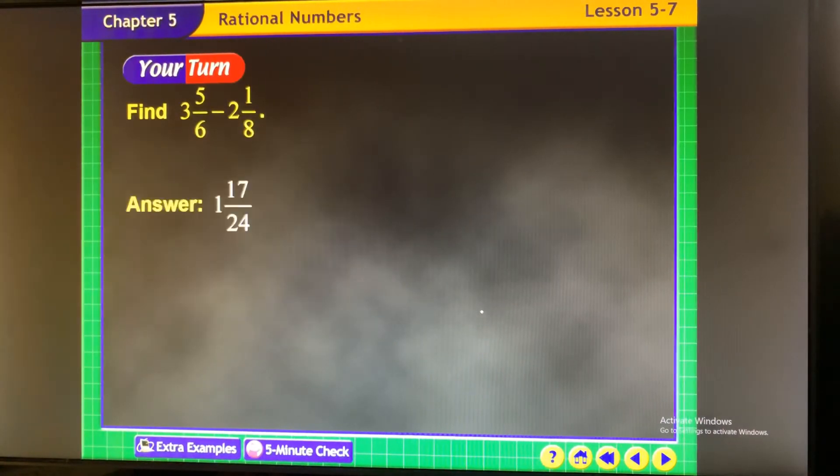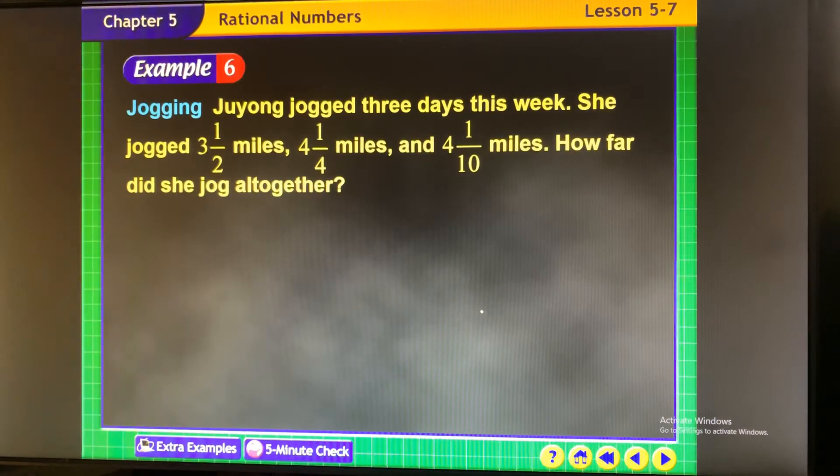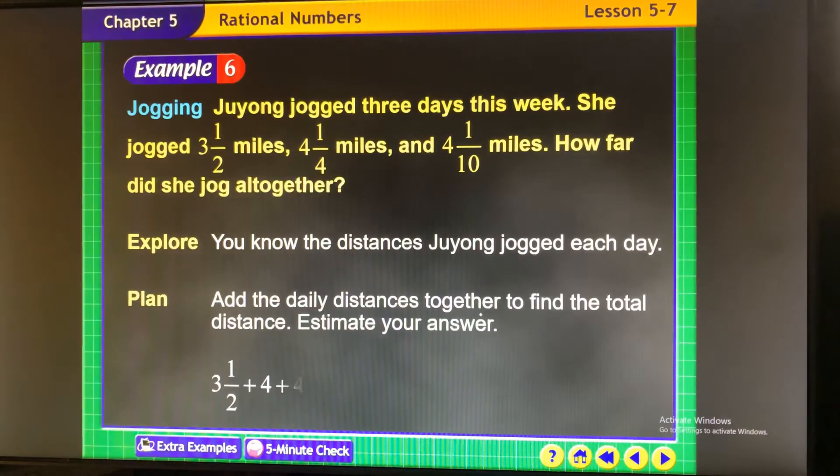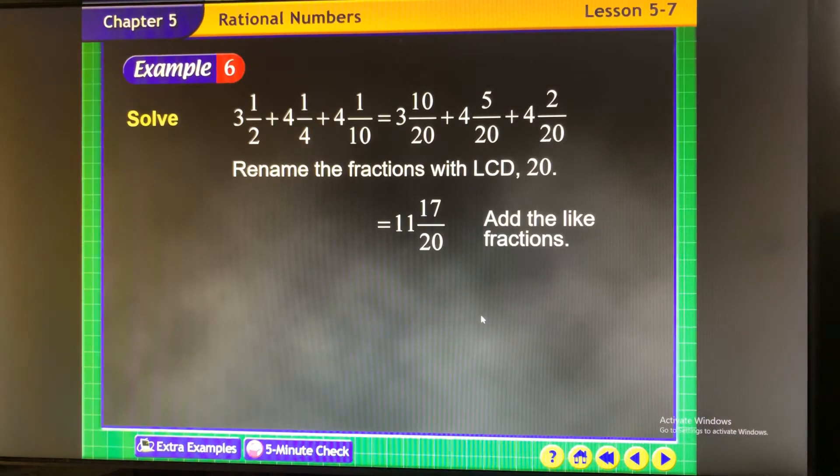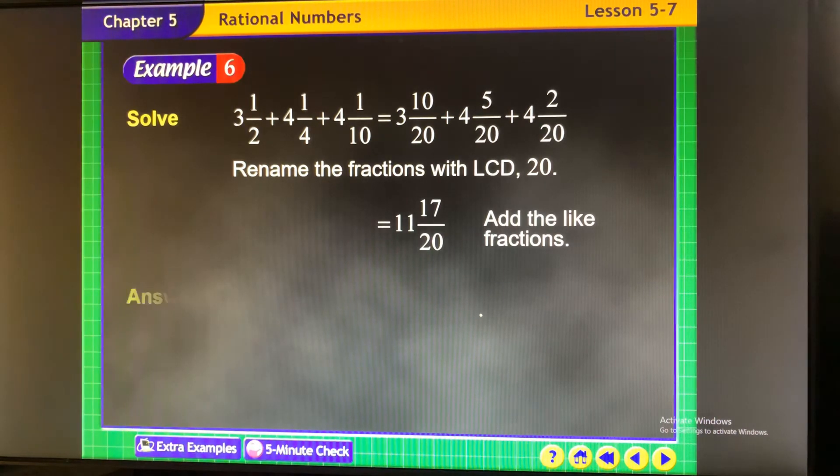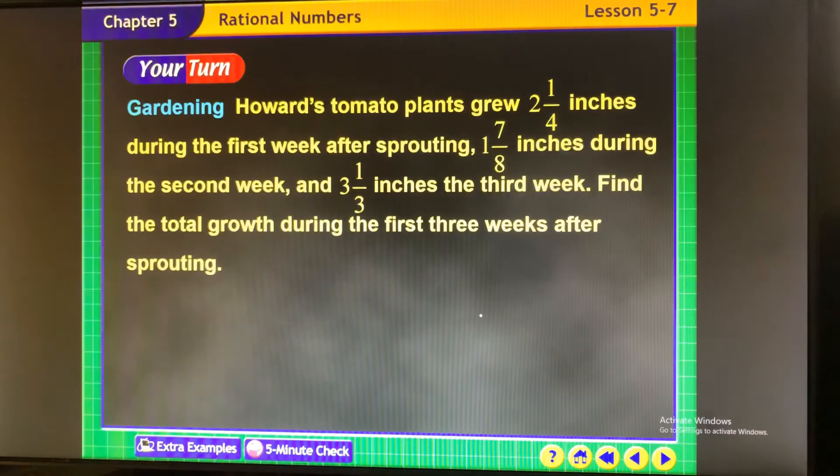Same process. You're just adding 3 1⁄2 plus 4 1⁄4 plus 4 1⁄10 together. So add them all together. Get your common denominator of all three of them, which happens to be 20, to figure out the total jogging. Make sure you pause that if you need to go back.